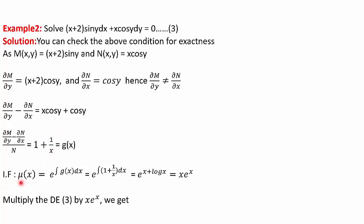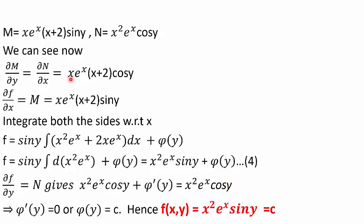The integrating factor mu(x) = e to the power of the integral of g(x) dx, with g(x) = 1 + 1/x, gives us x·e^x. We multiply the differential equation by x·e^x. The new M = x·e^x·(x + 2 sin y) and new N = x²·e^x·cos y. Now del M by del y and del N by del x both equal x·e^x·(x + 2 cos y), so the equation has become exact.